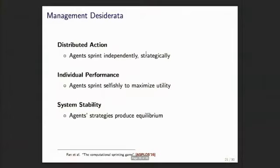We have three desiderata in this setting. First, distributed action: we don't want agents to go back to the centralized coordinator before every sprint. Sprinting decisions happen on the order of microseconds, but communicating with the manager requires milliseconds across the network. So agents must decide independently and strategically. Second, maximize individual performance — agents care only about their own performance. Third, system stability: given maximized utility, these strategies produce an equilibrium where all agents are playing their best response.